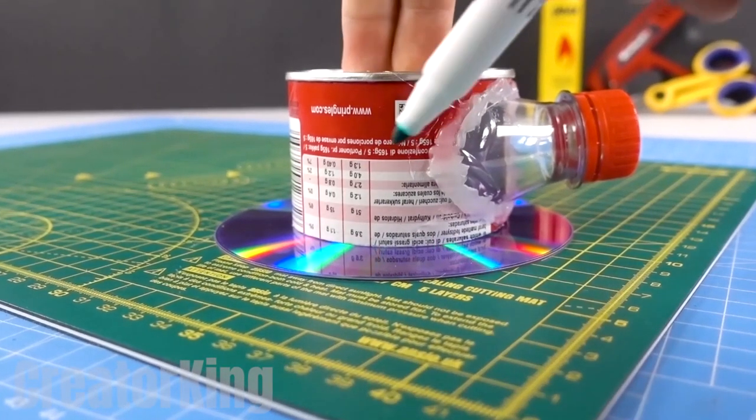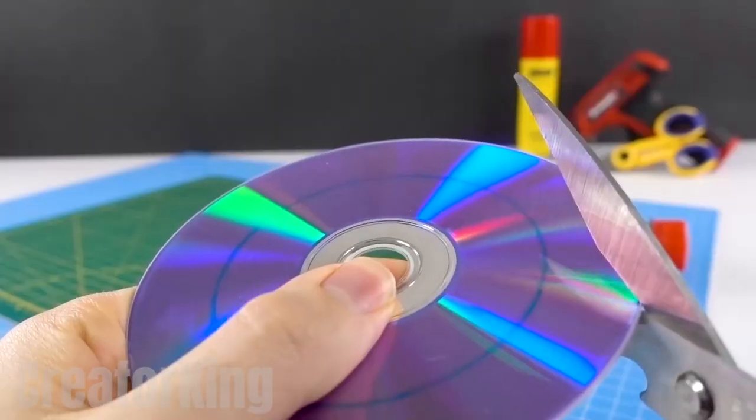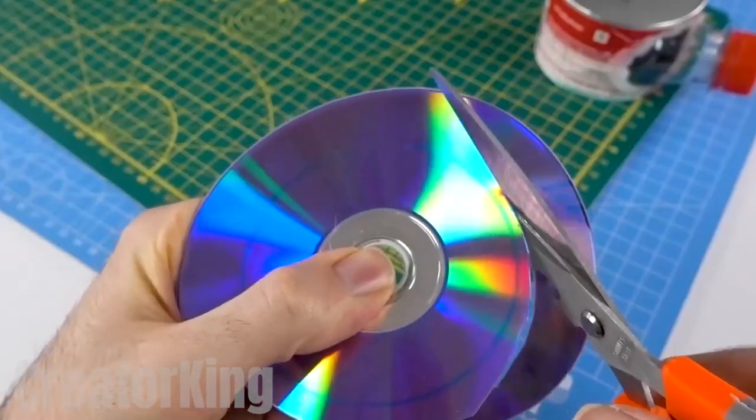Using a pen, draw lines through the disc just like you're cutting a cake. Once you've outlined the base of the Pringles on the disc, we'll cut it with some scissors.